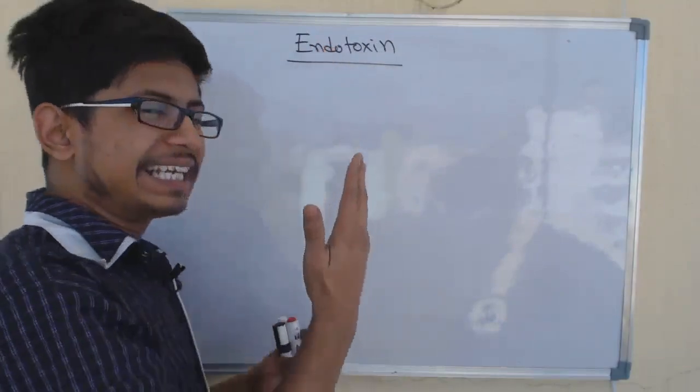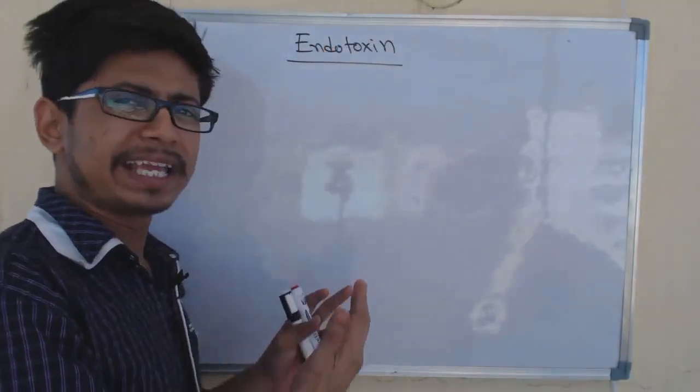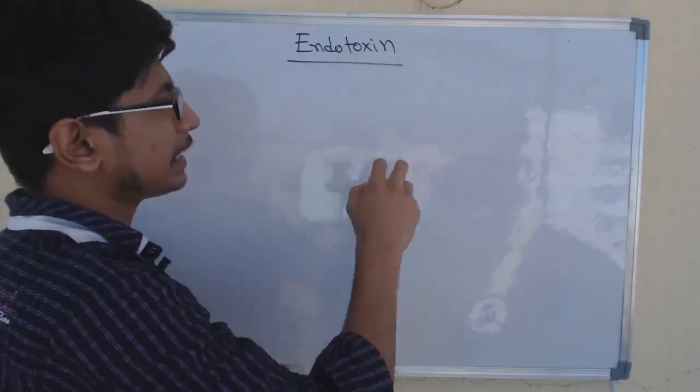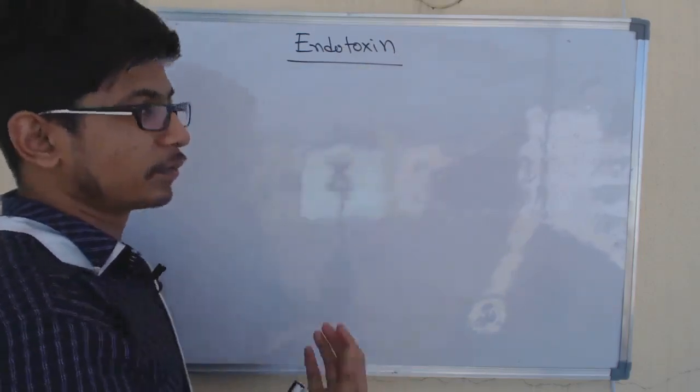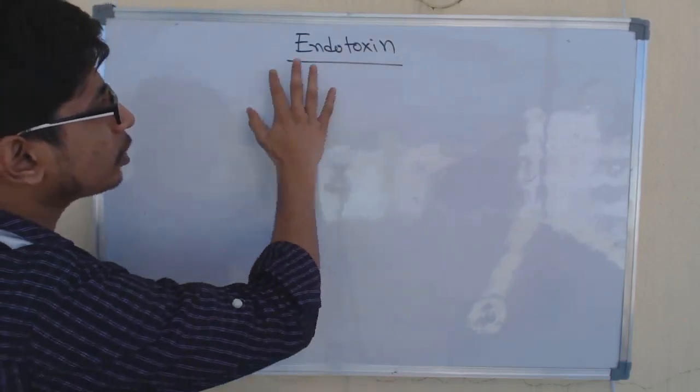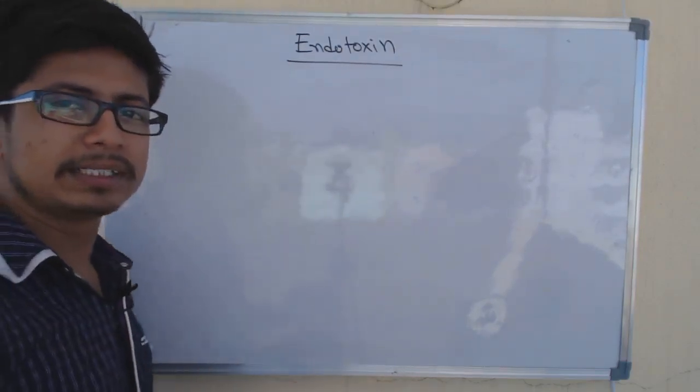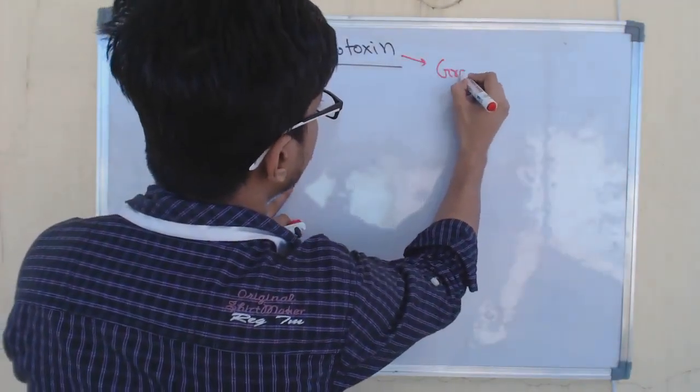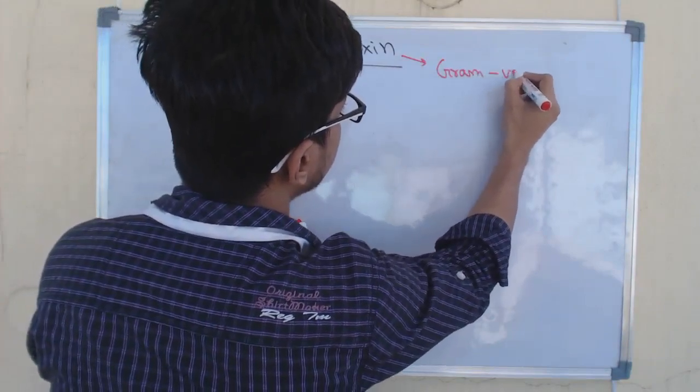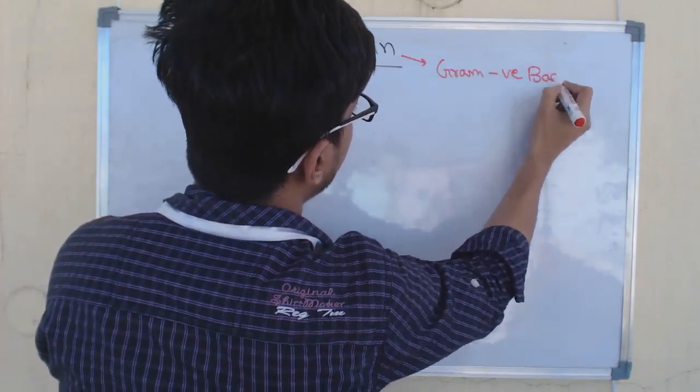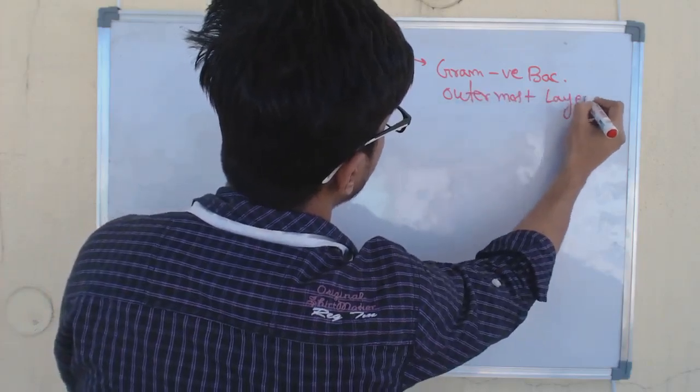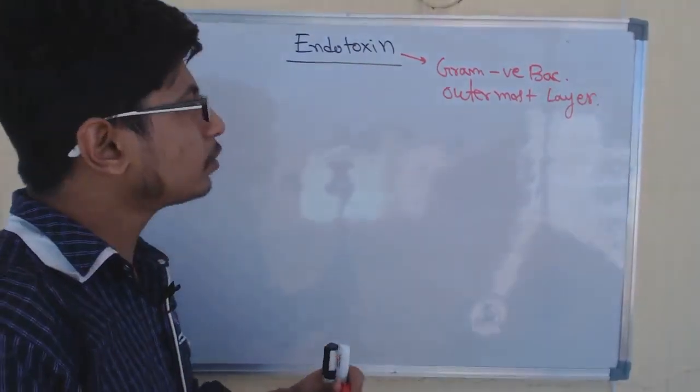The term 'endo' means inside or something which is attached or present inside, and 'toxin' means anything that is poisonous, that is dangerous for our body. In this case, endotoxin is nothing but the outermost layer of gram-negative bacteria. The outermost layer from gram-negative bacteria.